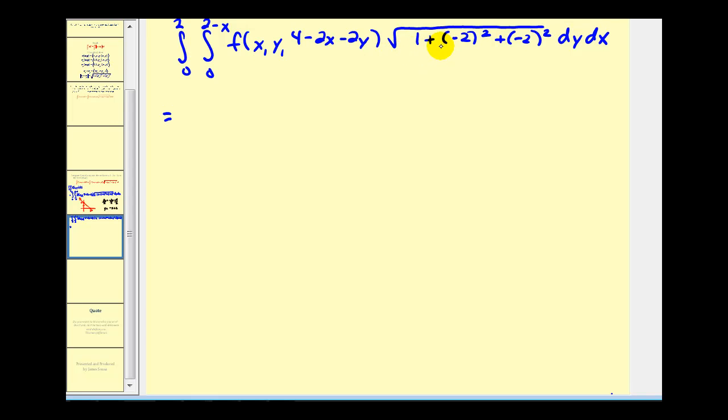We have the square root of 1 + 4 + 4, which is the square root of 9. So we have an extra factor of 3.